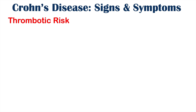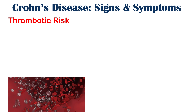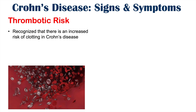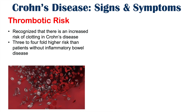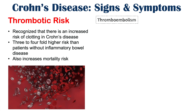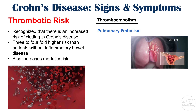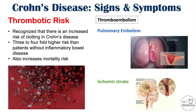A very significant risk in Crohn's disease patients is thrombotic risk — an increased risk of clotting. Crohn's disease patients have a three to four-fold higher risk of developing clots than patients without inflammatory bowel disease, and this thrombotic risk increases mortality. Consequences include pulmonary embolism, where a clot forms in a vein and travels to the lungs, and ischemic stroke, where a clot travels to the brain. These are two major, high-mortality complications of this thrombotic risk.